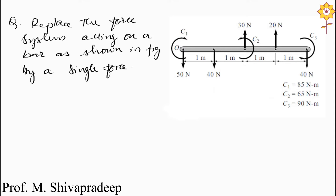This is an unlike parallel force system. You can see two forces acting upward and three forces acting downward on the bar. We also have three couples: C1, C2, and C3. Each couple is a pair of forces acting on the same point. The given values are C1 = 85 Newton-meter, C2 = 65 Newton-meter, and C3 = 90 Newton-meter.